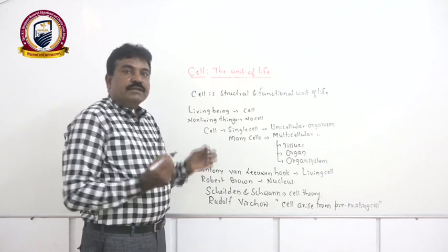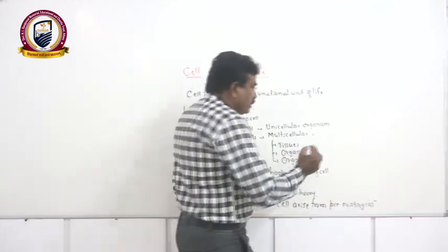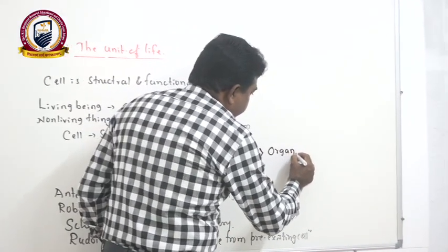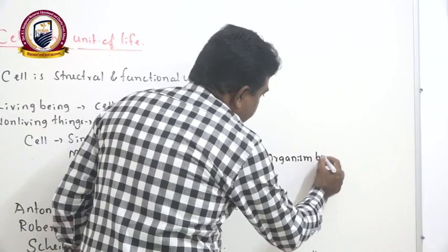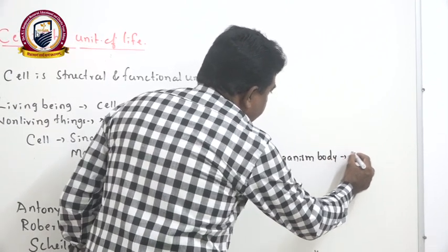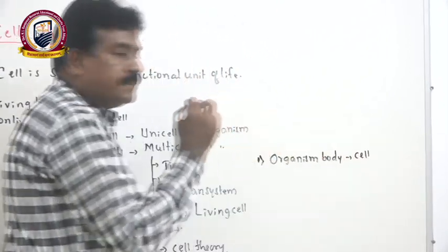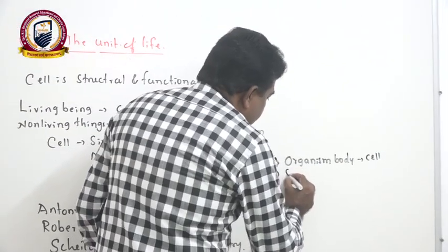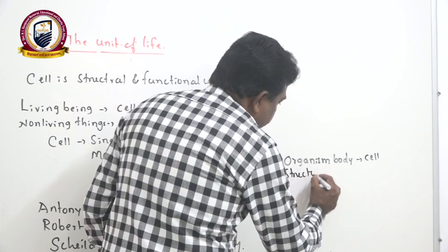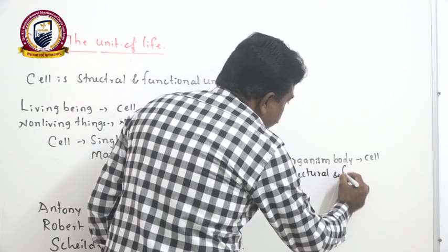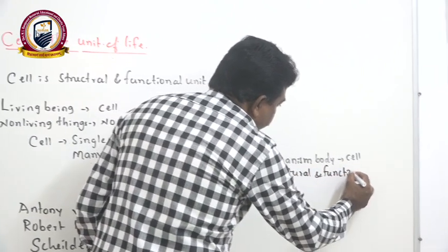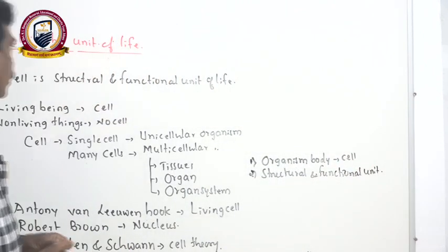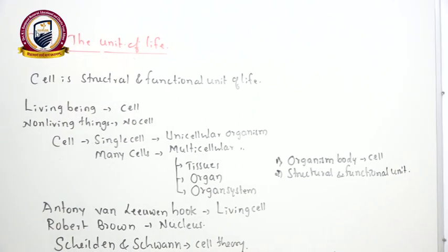Finally, cell theory can be concluded with two important concepts: first, the organism's body is composed of a single cell or group of cells; second, cell is the structural and functional unit of life. These two important concepts are explained by cell theory.